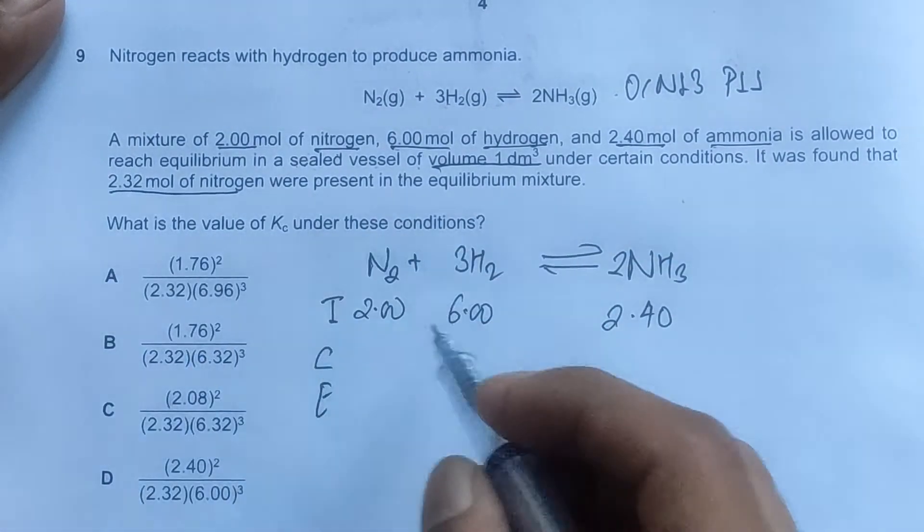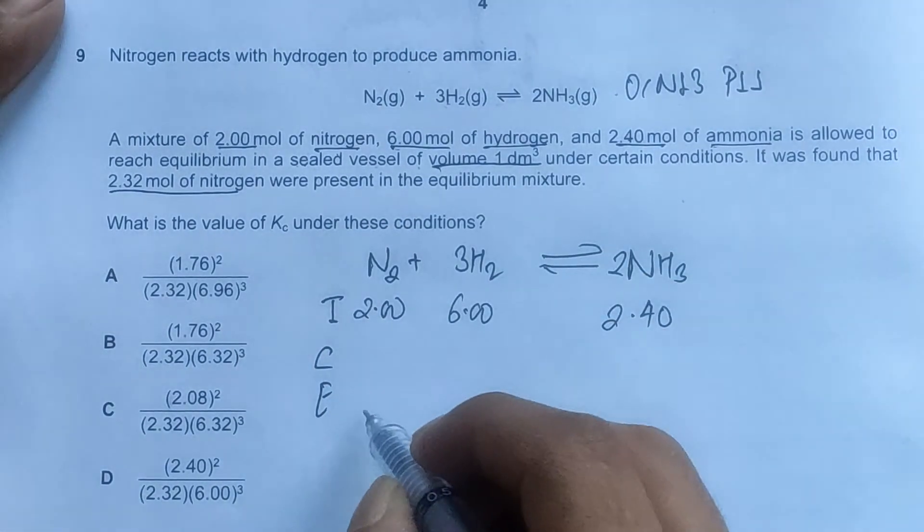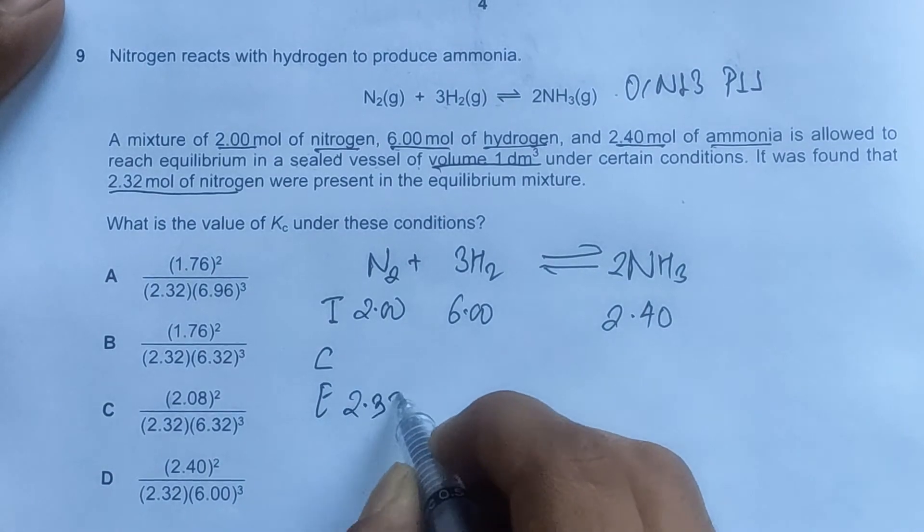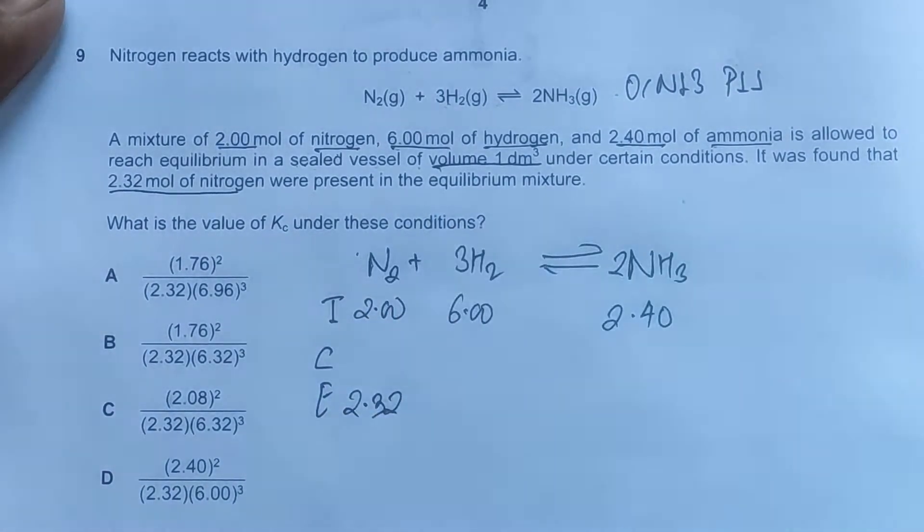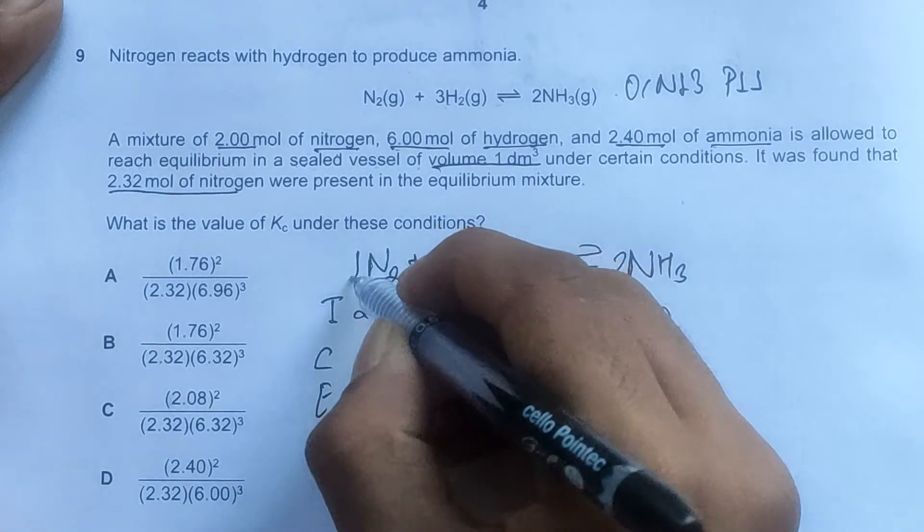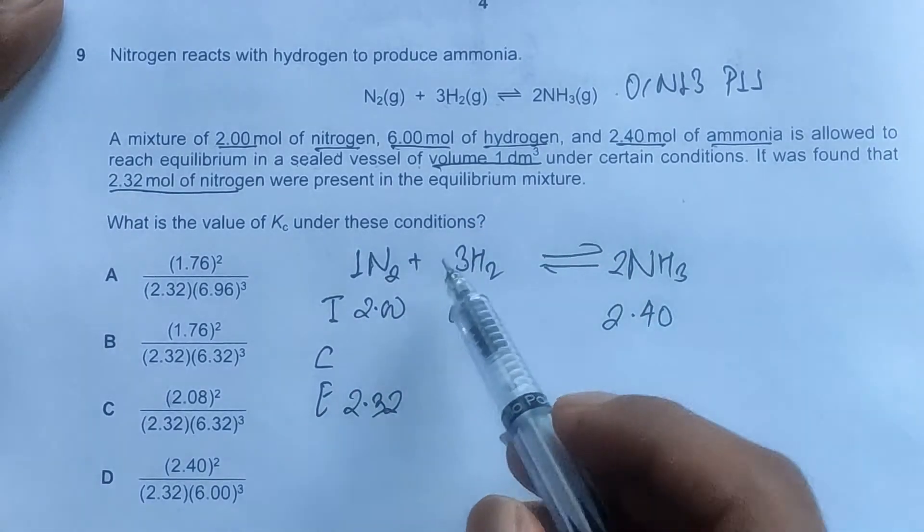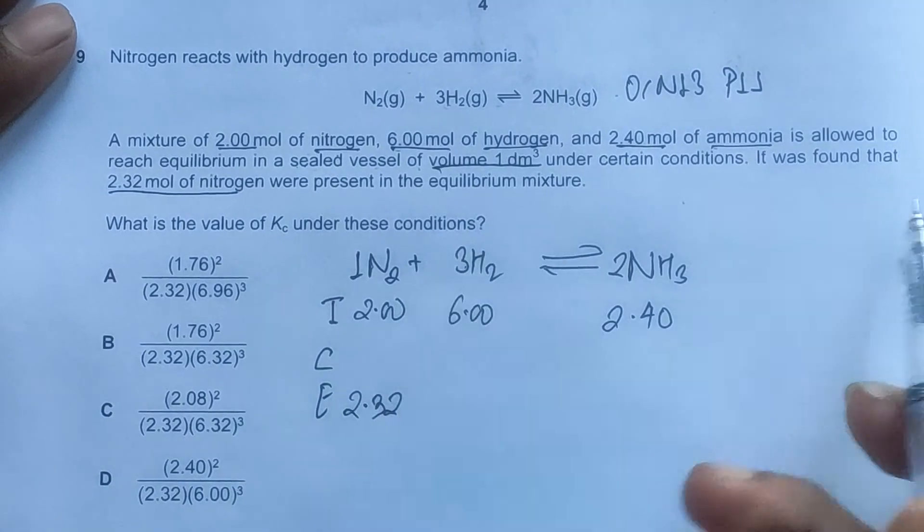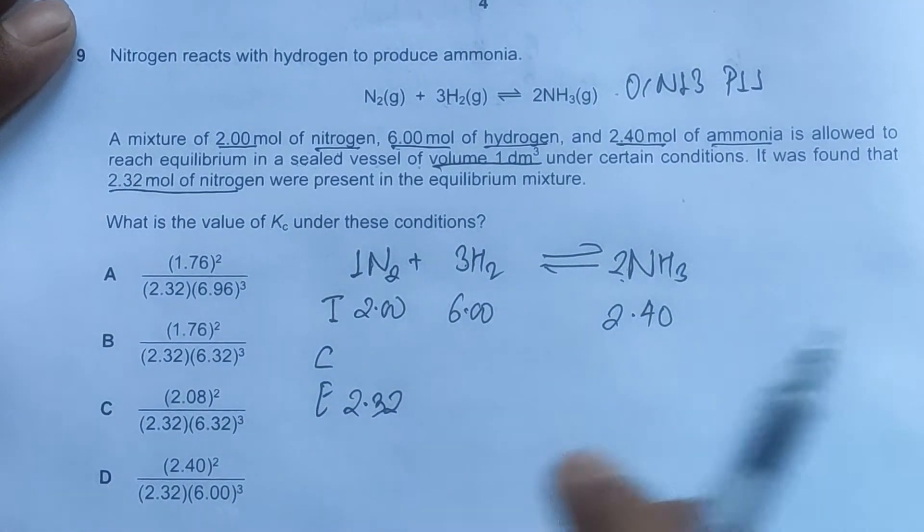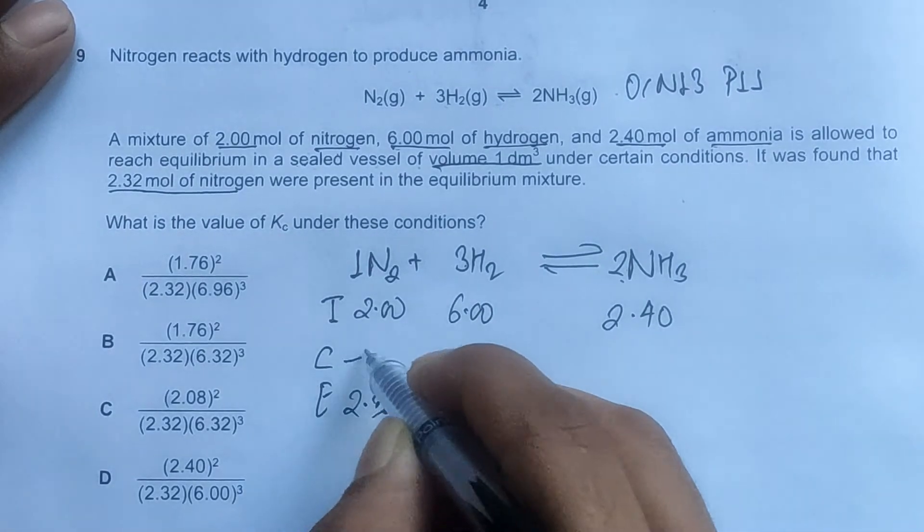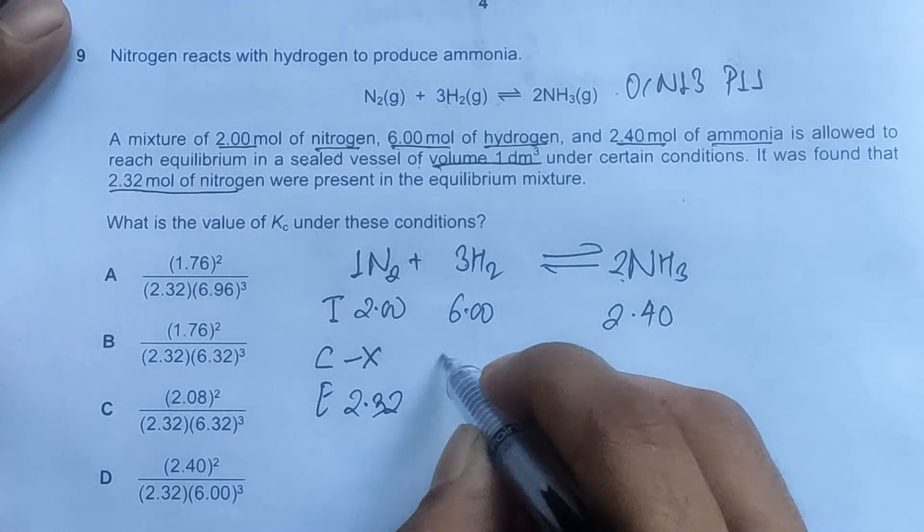At equilibrium under 1 dm³, we found that 2.32 moles of nitrogen was present in the equilibrium mixture. Now we look at the stoichiometric values: this is 1, this is 3, and this is 2. Here we are considering the forward reaction from formation of nitrogen to be a forward reaction, so this is minus X, this will be minus 3X, and this will be plus 2X.